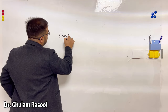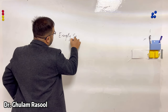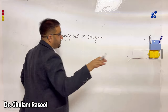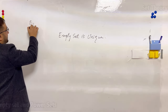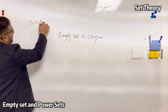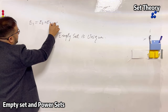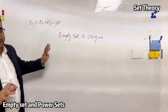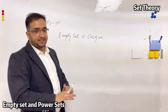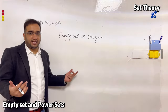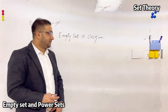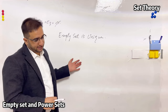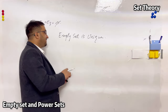An empty set is unique, which I already told you. If I have three empty sets, they are always equal — there is only one empty set in the whole universe, which is a set with no elements. To prove this again, I will use the method of contradiction.